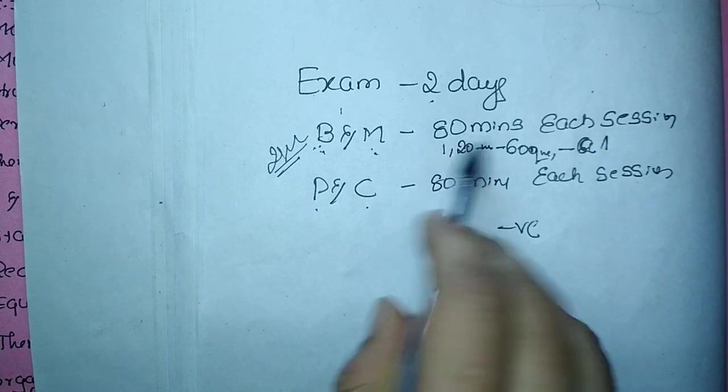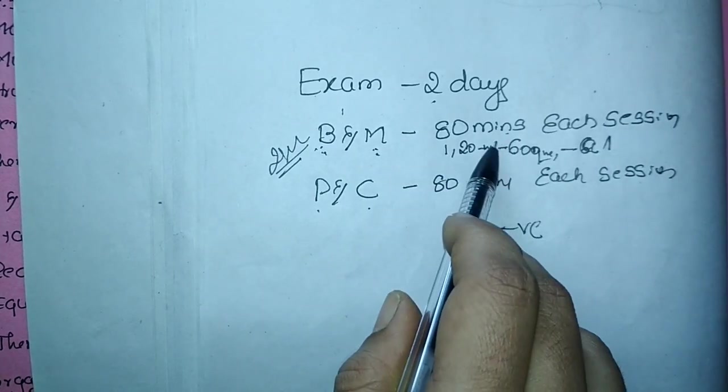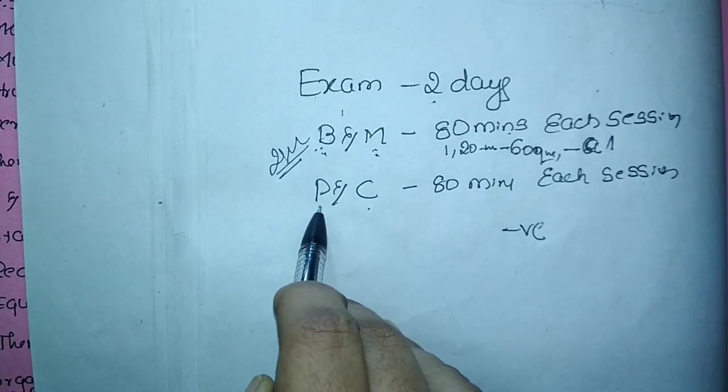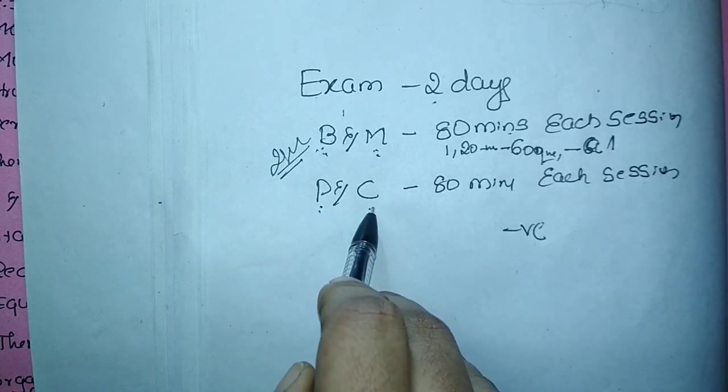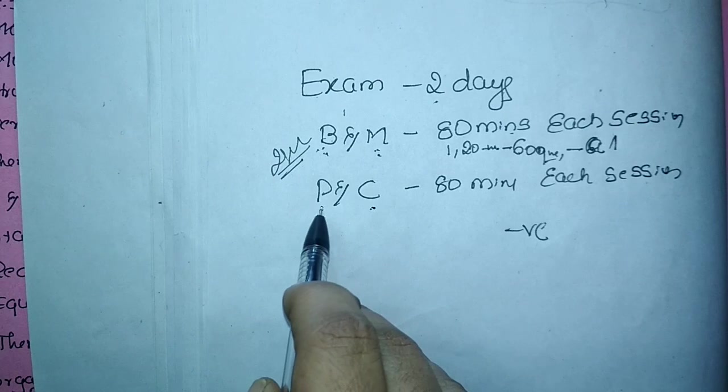So bio for 60 marks, 80 minutes. Maths for 60 marks, 80 minutes. Similarly for physics, 60 marks, 80 minutes. Chemistry, 60 marks, 80 minutes. Like that. Physics, 60 marks as I told.